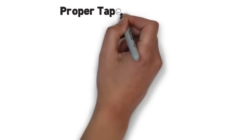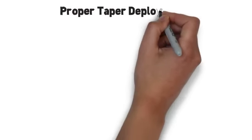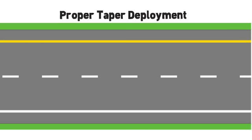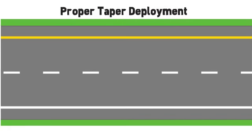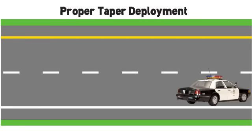The deployment of five cones to block one traffic lane is demonstrated here. In this example, the skip lines are used to guide taper setup.